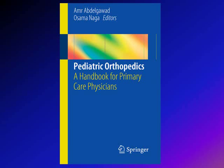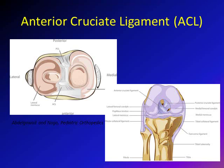A good source that you can use is this book written by myself and Dr. Naga. Now let's briefly discuss what the anterior cruciate ligament is. The anterior cruciate ligament is one of the main ligaments of the knee. It extends from the anterior part of the tibia to the posterior femoral notch.